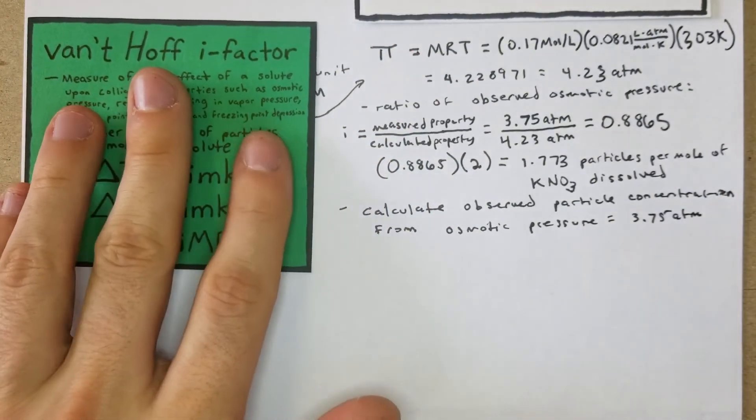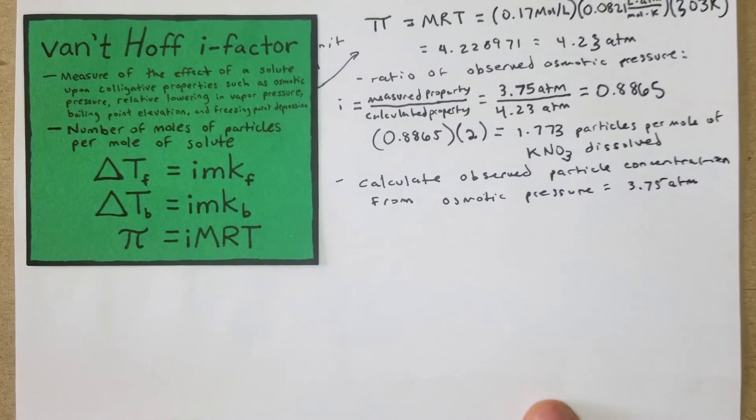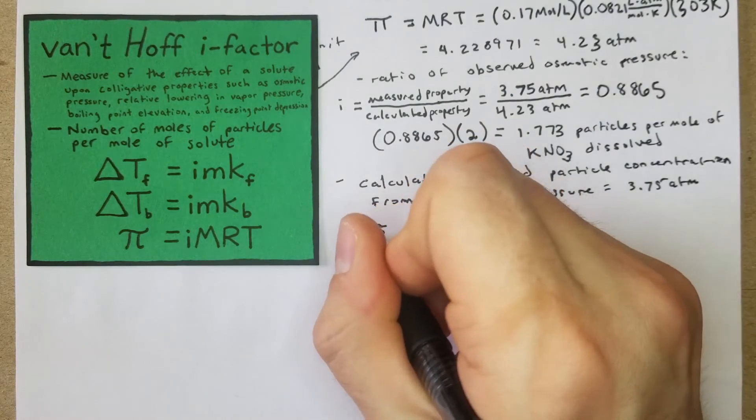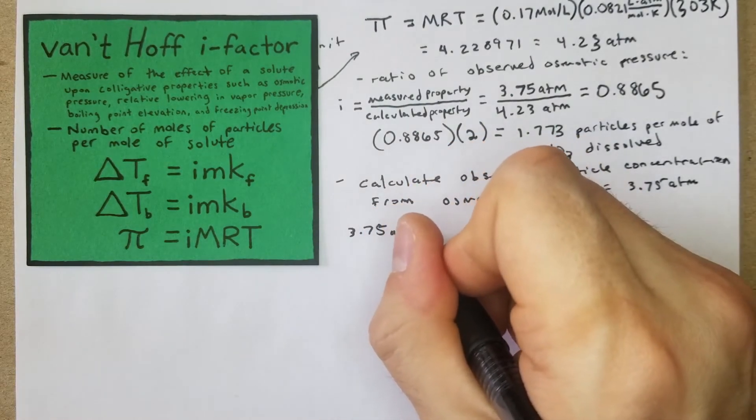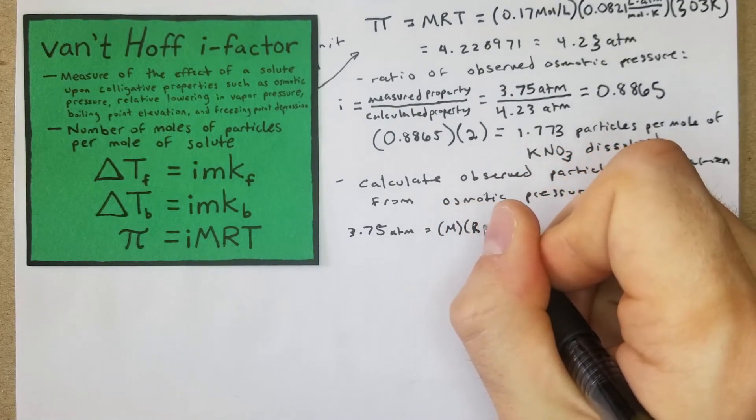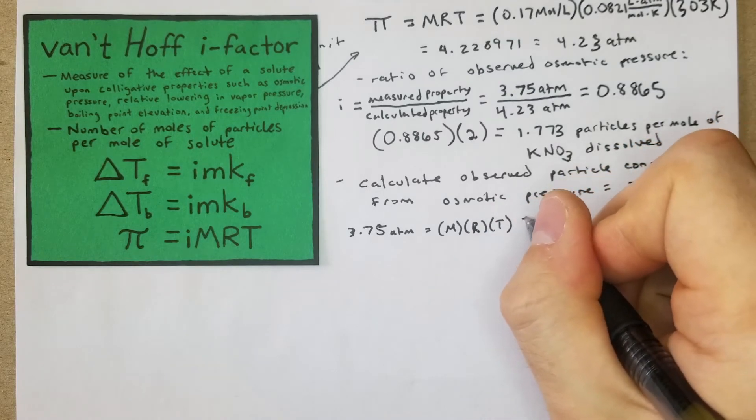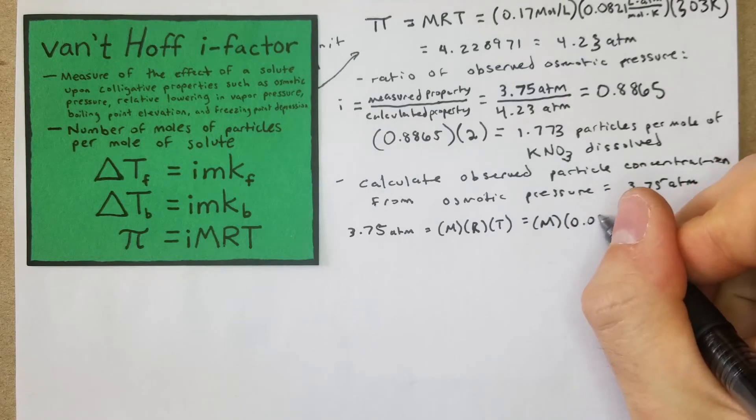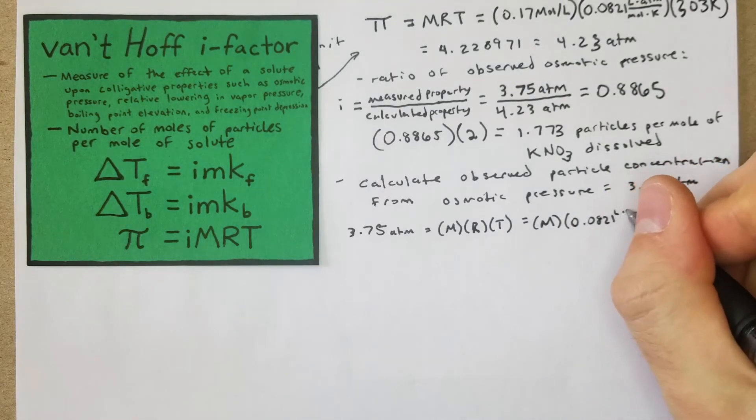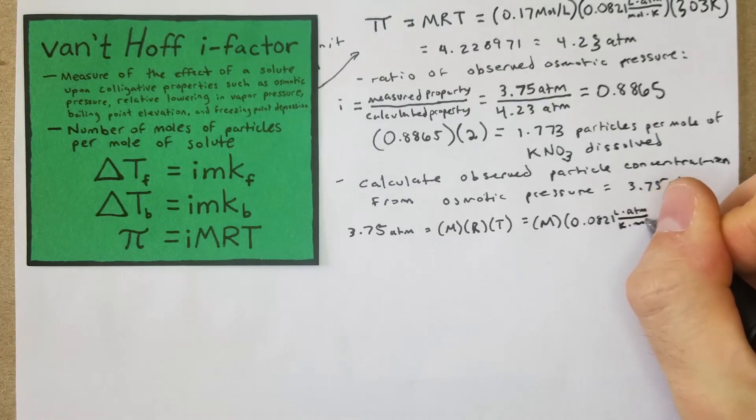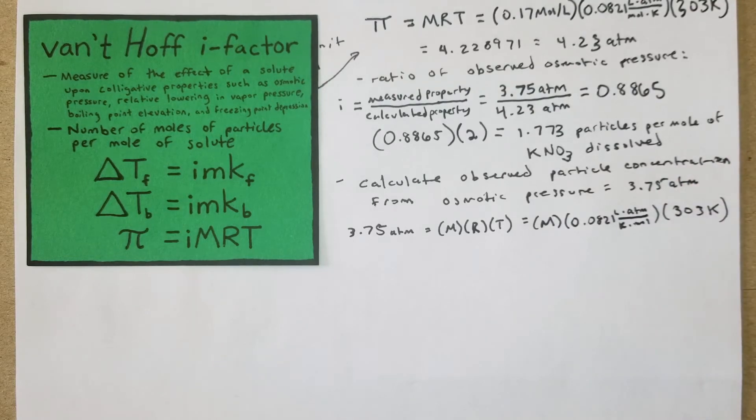From there we're going to take our 3.75 atm and put it back into this MRT formula. We have M times our R value 0.0821 liters times atm over kelvin per mole, times our 303, and then we're going to solve for this.